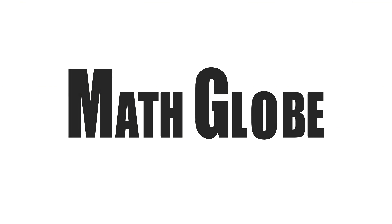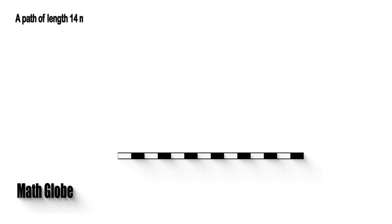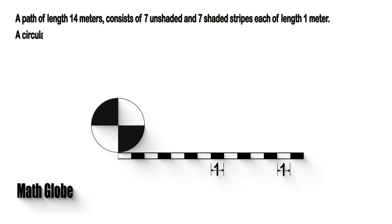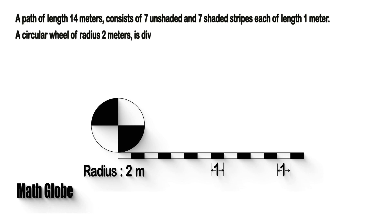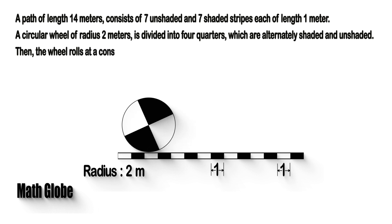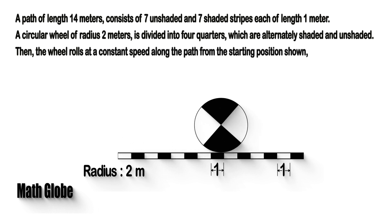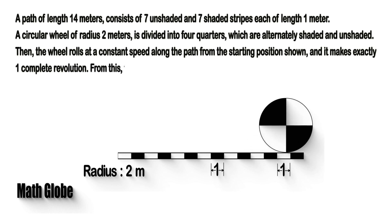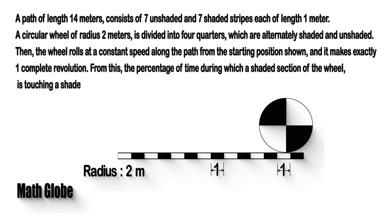Hi, this is MathGlobe. A path of length 14 meters consists of 7 unshaded and 7 shaded stripes, each of length 1 meter. A circular wheel of radius 2 meters is divided into 4 quarters, which are alternately shaded and unshaded. The wheel rolls at a constant speed along the path from the starting position shown, and it makes exactly one complete revolution. The percentage of time during which a shaded section of the wheel is touching a shaded part of the path is closest to what percent?